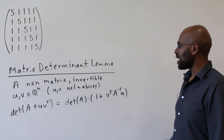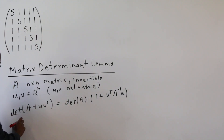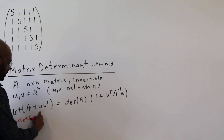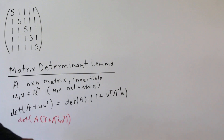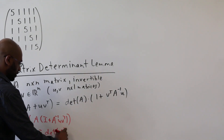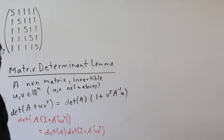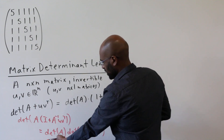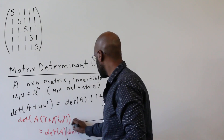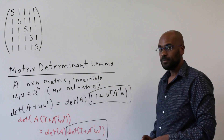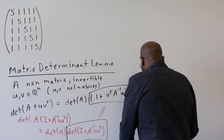So let's think about how we'd prove this. We have a determinant of A here, so it makes sense to factor out A. We can write A + u·v^T as A times (I + A⁻¹·u·v^T), so the determinant of this product equals the determinant of A times the determinant of I + A⁻¹·u·v^T. So to prove the lemma, it suffices to show that the determinant of I + A⁻¹·u·v^T equals 1 + v^T·A⁻¹·u.